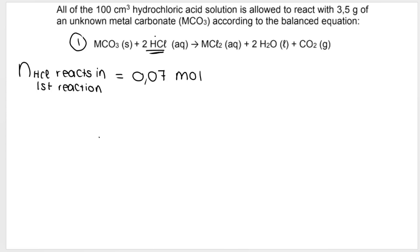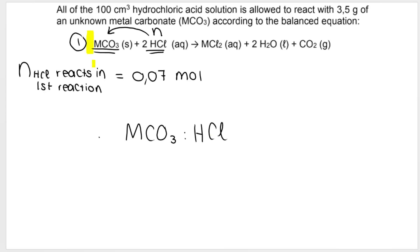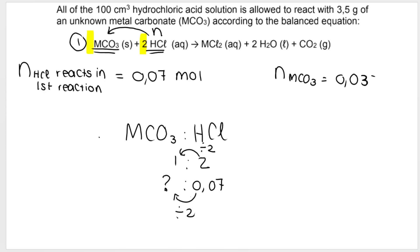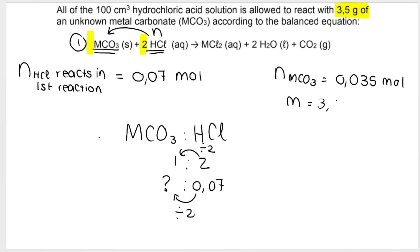Now that we know 0.07 mol of HCl reacted in the first equation, we use the mole ratio to find moles of the unknown metal carbonate MCO₃. From the balanced equation, MCO₃ to HCl is a 1:2 ratio. So to go from 0.07 mol of HCl, we divide by 2, giving 0.035 mol of MCO₃. We also know the mass of the unknown metal carbonate is 3.5 grams.